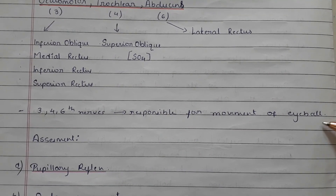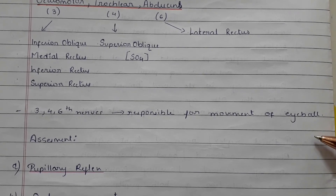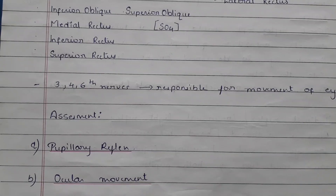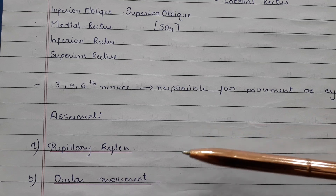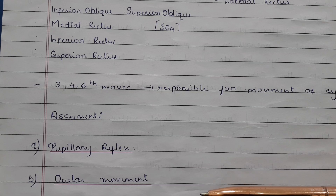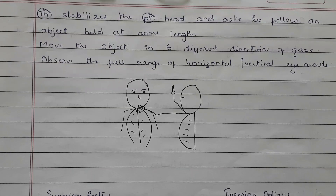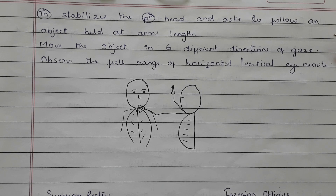The assessment for the third, fourth, and sixth cranial nerves includes pupillary reflex, as discussed for the optic nerve, and ocular movement. For ocular movement, the therapist stabilizes the patient's head and asks the patient to follow an object held at arm's length. Move the object in six different directions of gaze. Observe the full range of horizontal and vertical eye movements.